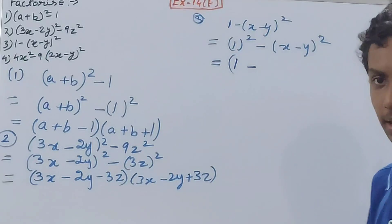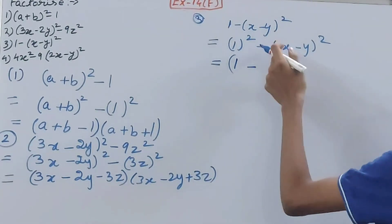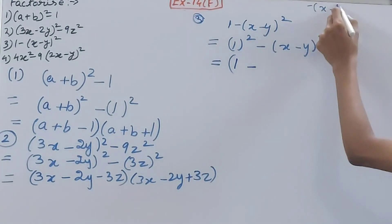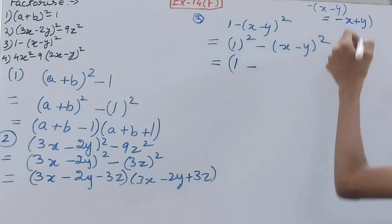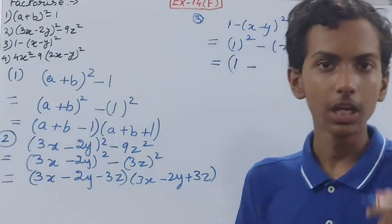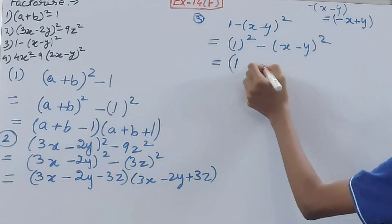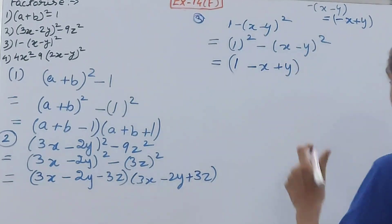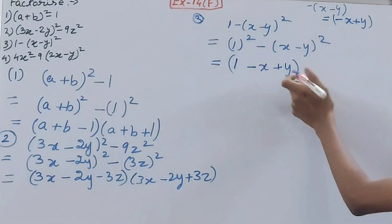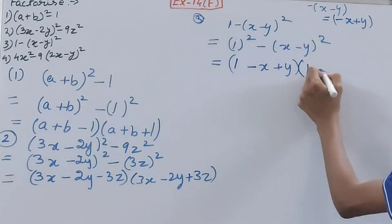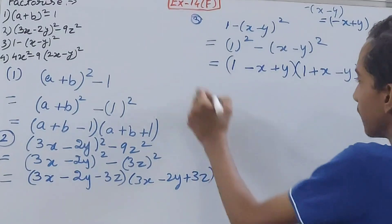Now applying the identity, the first bracket gives a, which is 1, minus b, which is -(x - y). When we open -(x - y), the signs change: minus x becomes plus, plus y becomes minus, giving (1 - x + y). The second bracket gives (1 + x - y). That is your answer.